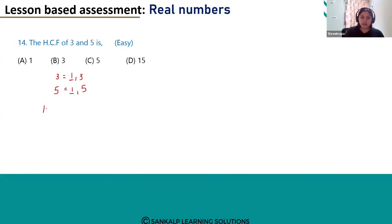So when we take the HCF of 3 and 5, the answer will be 1. So the correct option for this question is option A, 1.